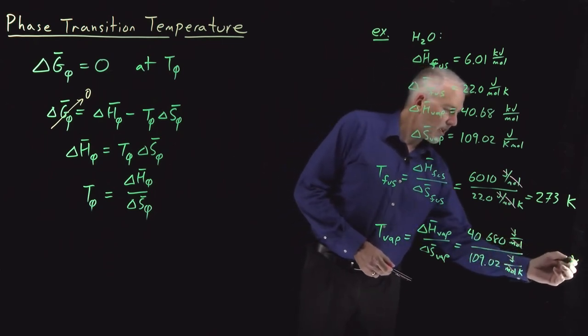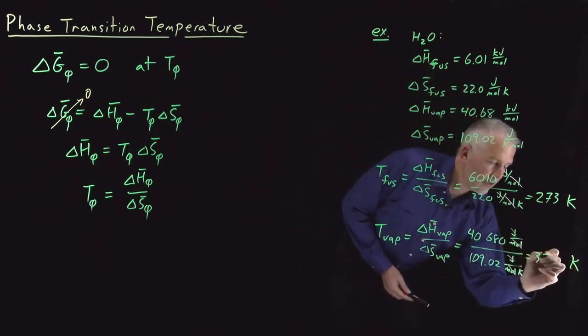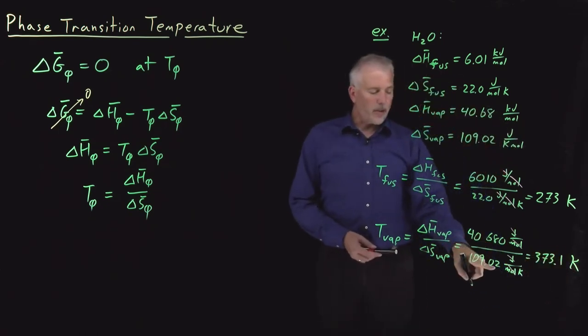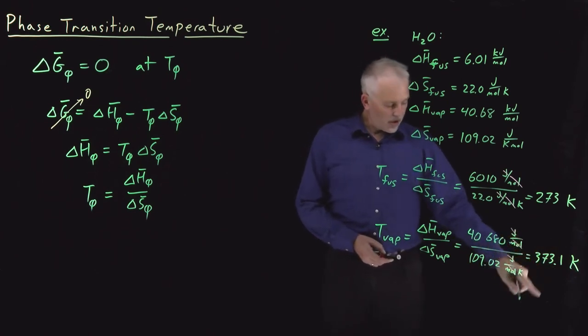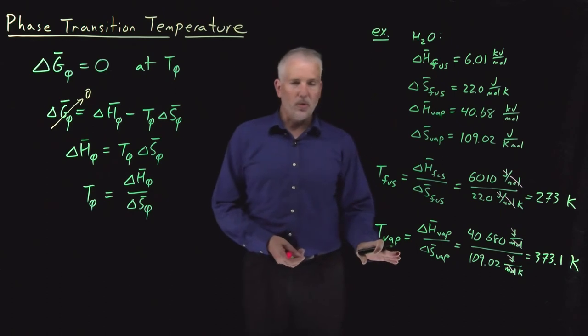We have a few more sig figs here. So that ratio, if I take 40,680 divided by 109.02, you can confirm that that ratio comes out to be 373.1 kelvin is our prediction for the boiling point of water.